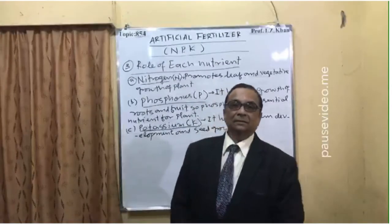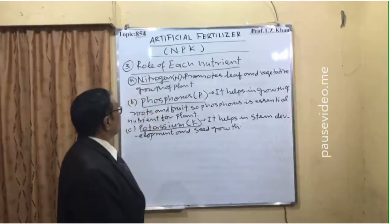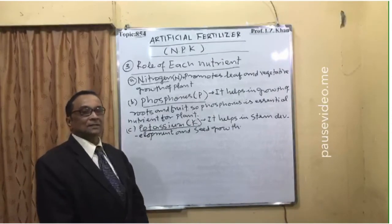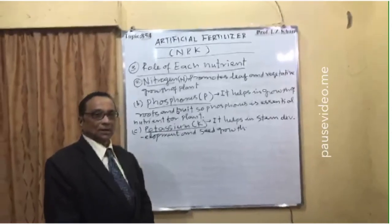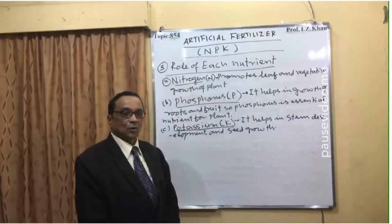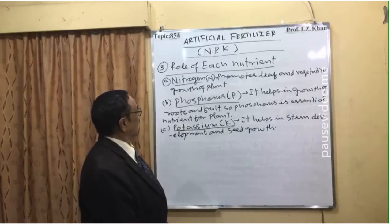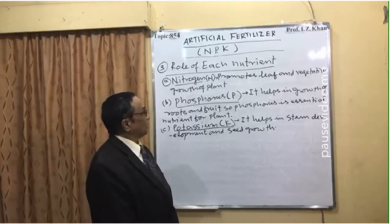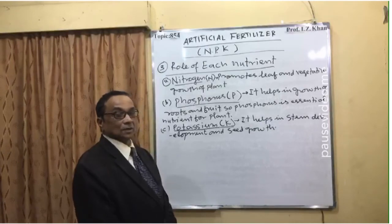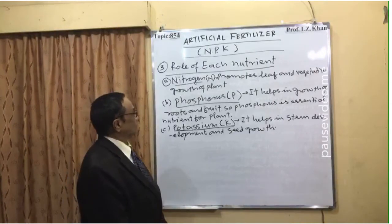Now here is the role of each nutrient. First, nitrogen promotes leaf growth. If nitrogen is higher, more stomata and cells are active, leading to more vegetative growth. However, when nitrogen is in high percentage, other types of growth — such as root or fruit development — will be reduced.